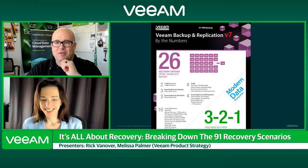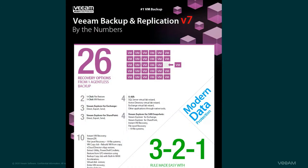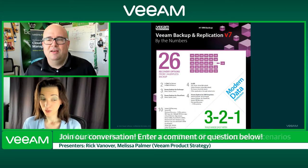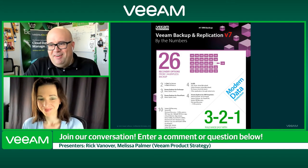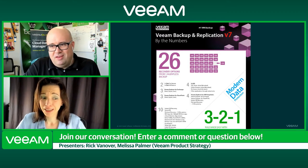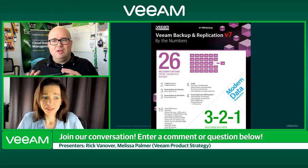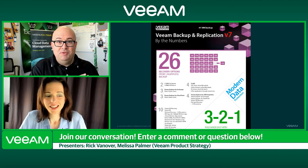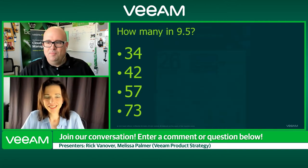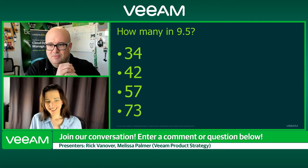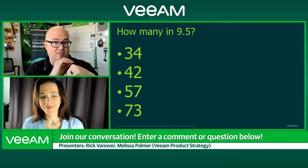Let me break this down a little bit. We used to do infographics that would tell you all the different recovery scenarios from one agentless backup. Before we had the agent for Windows integrated, it was so many recovery scenarios from one agentless backup — no one could touch that. And still to this day as we build through, you're going to be blown away. What year was V7, Rick? I want to say that was 2014. We got the boss watching, better behave! Yeah, I think it was 2014 or 2015 for V7. Pretty good for that long ago. So how many recovery scenarios were in 9.5? This was the base release, not update four.